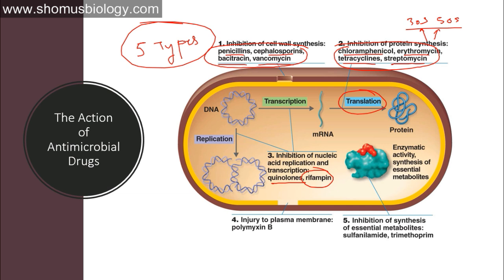The fourth type of antimicrobial action is injury to the plasma membrane — example: polymyxin B. These drugs are less common. Since bacteria have a cell wall outside the membrane, direct destruction is indirect, but it destabilizes the osmotic and charge balance of the cell, potentially leading to death. The fifth type is inhibition of synthesis of essential metabolites — examples include sulfanilamide and trimethoprim. These drugs prevent the synthesis of important metabolites inside the cell, stopping the cell from growing.